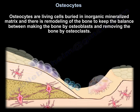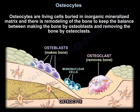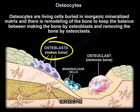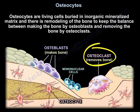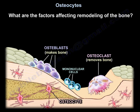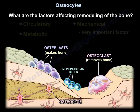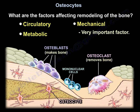Osteocytes are living cells buried in an inorganic mineralized matrix. There is remodeling of the bone to keep the balance between making bone by osteoblast and removing bone by osteoclast. The factors affecting remodeling can be circulatory, metabolic, and mechanical.